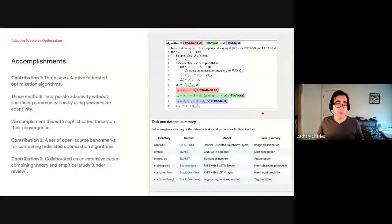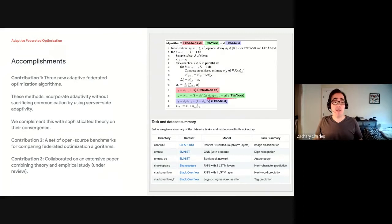So the results, accomplishments. We designed three new adaptive federated optimization algorithms. We call them FedAdaGrad, FedYogi, and FedAdam. And these are versions of our framework where the server uses an adaptive method such as AdaGrad, Yogi, or Adam. Yogi, for those of you not familiar, by the way, is a variant of Adam that involves a more conservative approach to changing the learning rate. And it's had a lot of great empirical success recently.